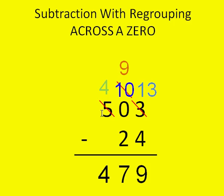So, five hundred three minus twenty-four equals four hundred and seventy-nine.